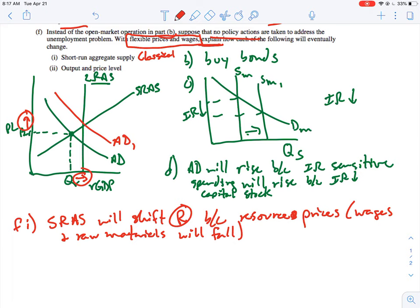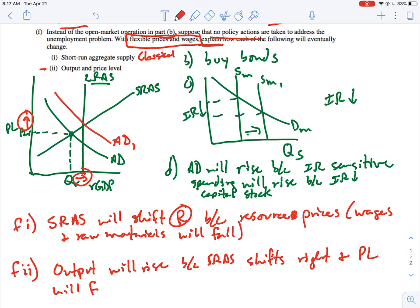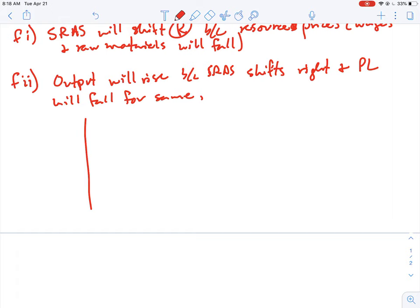And then F2, the output and price levels. So output will rise because SRAS shifts right and PL will fall for same. So you do not have to show this. You don't have to do it, you could. And I'm going to do it just to make sure that you guys understand.